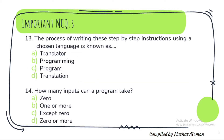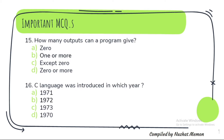Question 13: The process of writing step-by-step instructions using a chosen language is known as programming. Question 14: How many inputs can a program take? Zero or more. Question 15: How many outputs can a program give? The correct option is one or more.